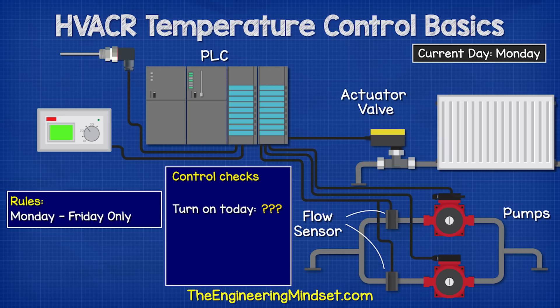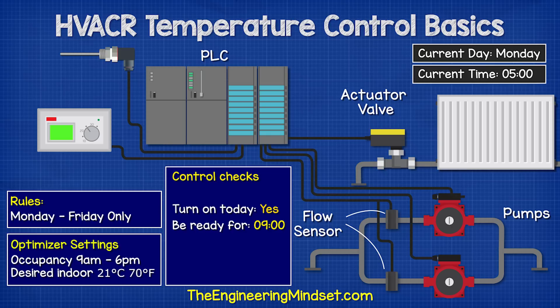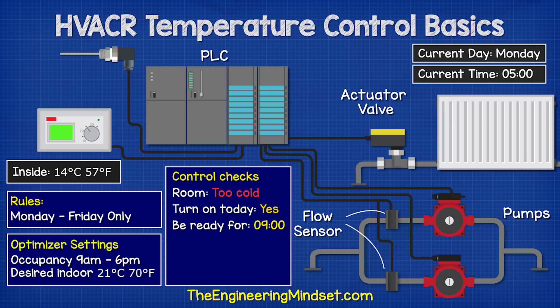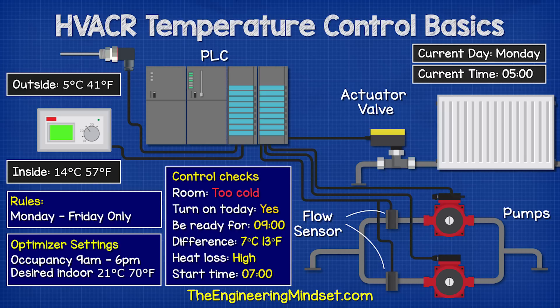This will check with the clock: should the heating turn on today? And if so, at what time will the building be occupied? The clock replies yes — the scheduled occupancy time is 9am. The PLC checks the current temperature of the room and calculates the difference between this temperature and the desired temperature. It then checks the outdoor temperature to calculate how long it will take to heat the building, because on a cold day it will take longer, so it will need to start earlier.